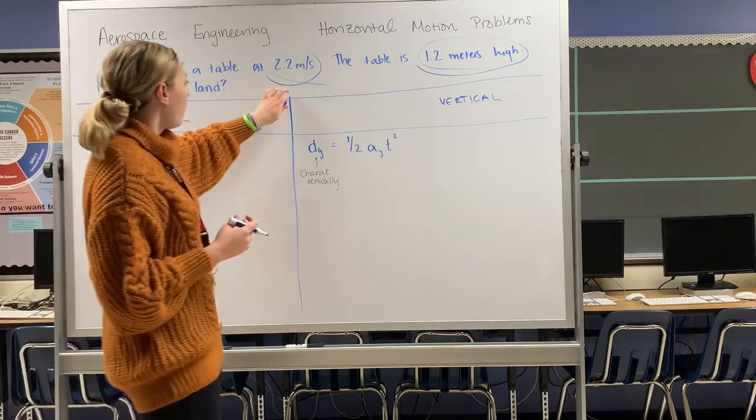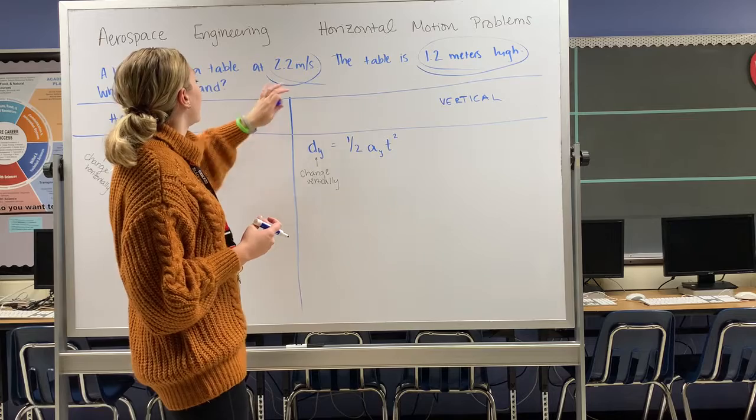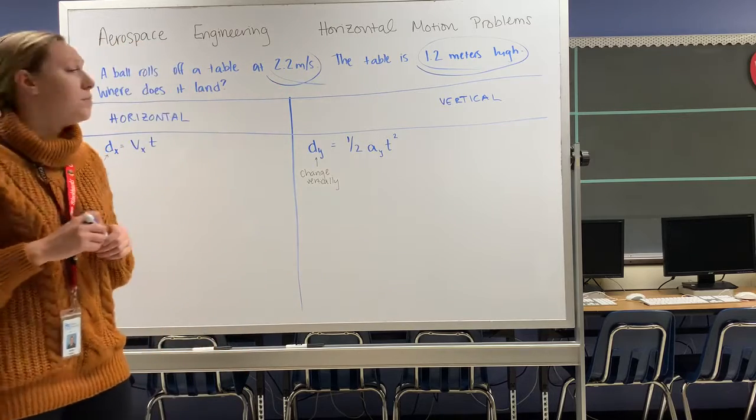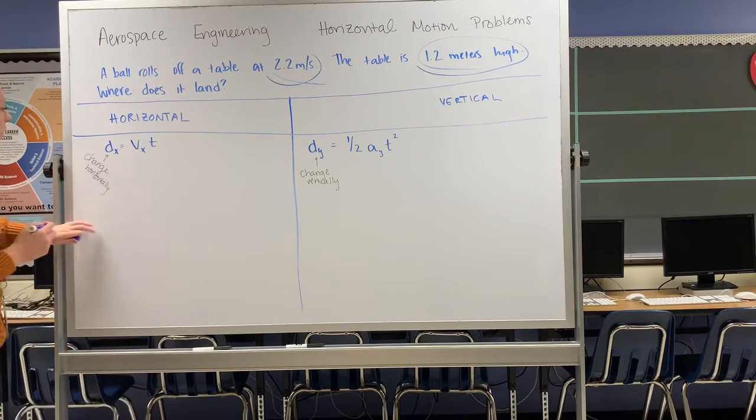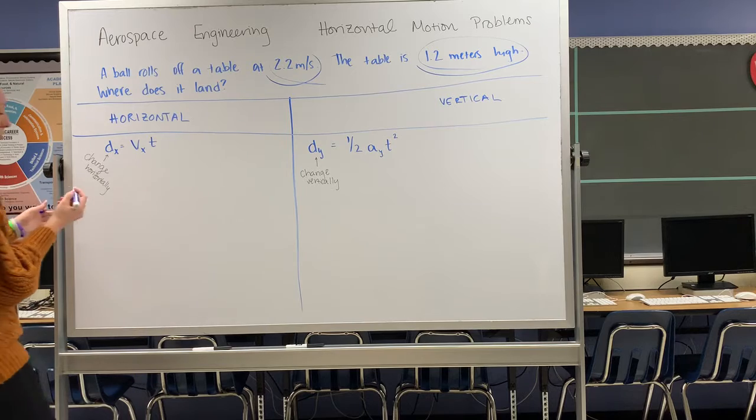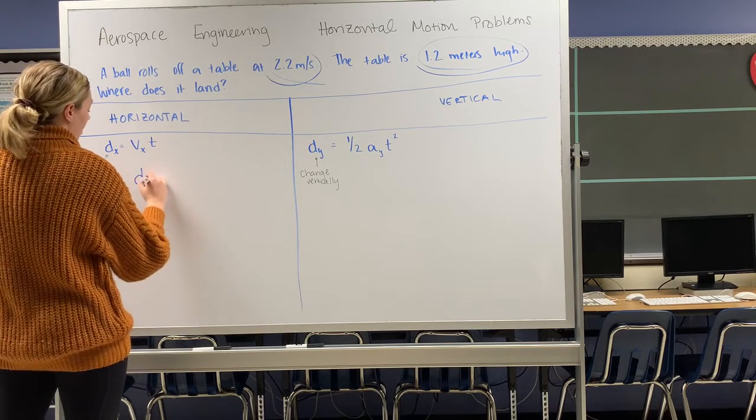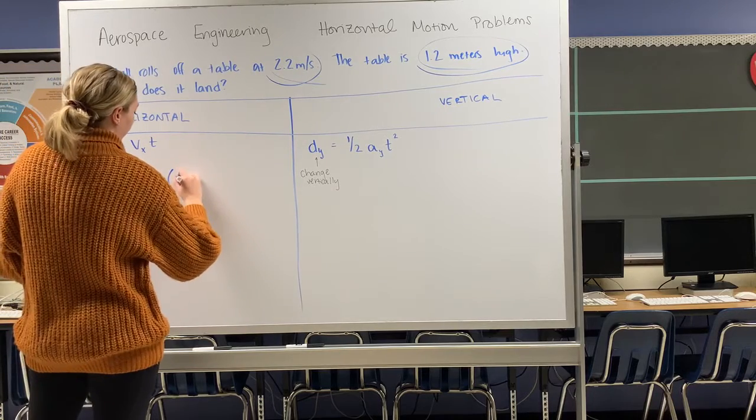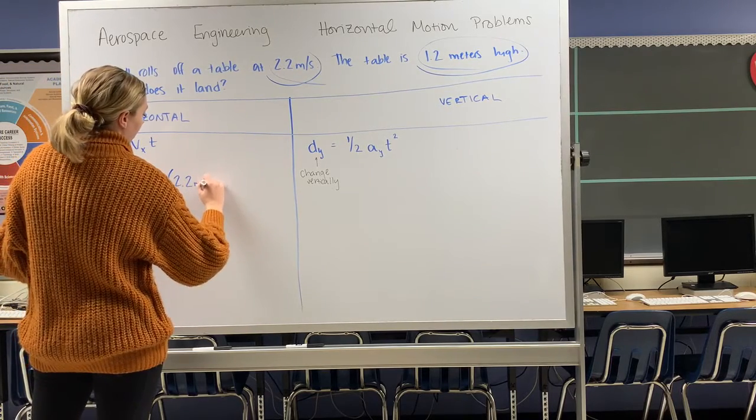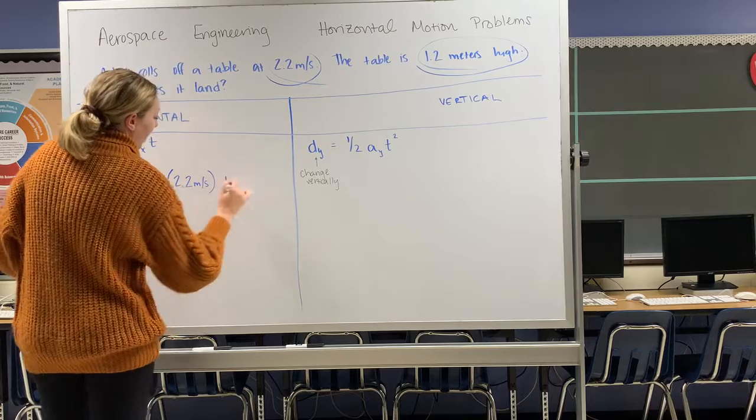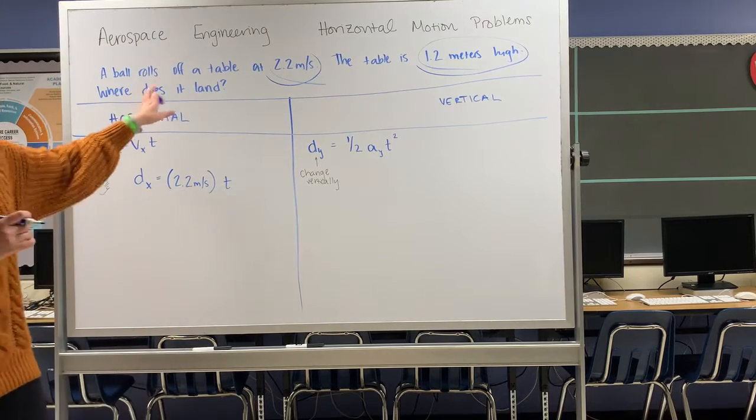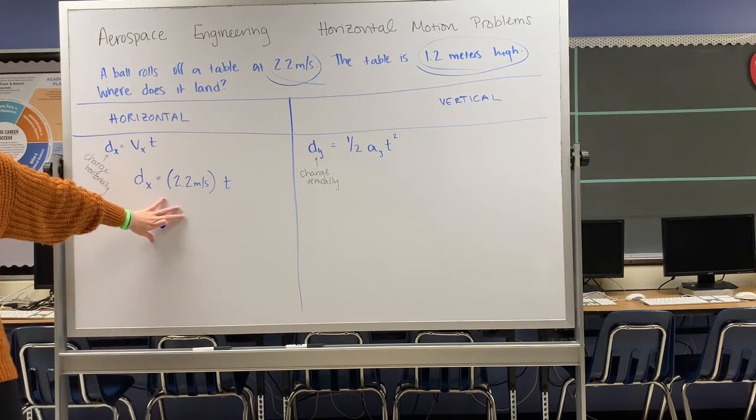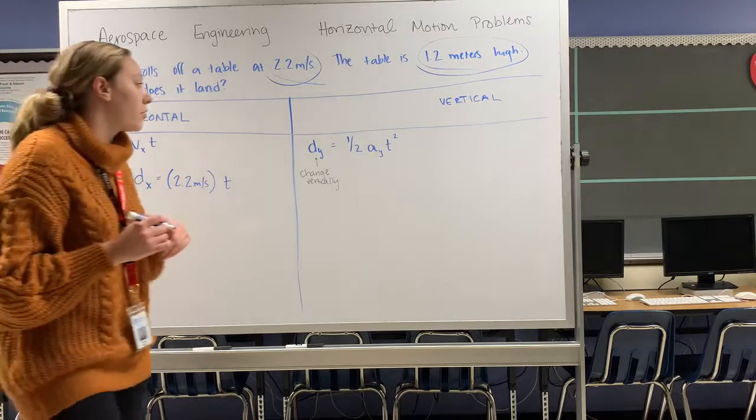If my velocity is 2.2 meters per second, that is going to be plugged into my horizontal equation. So my change horizontally, my d sub x, is equal to 2.2 meters per second, and I cannot solve for time. Time has not been given to me, which means I can do nothing more with this equation. I'm going to move on to the other side.